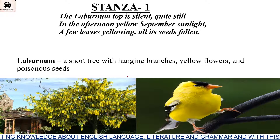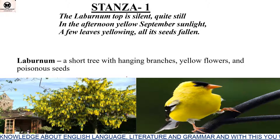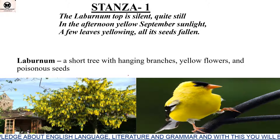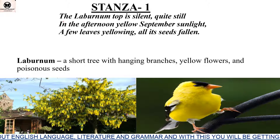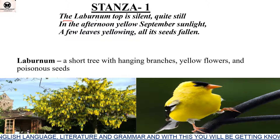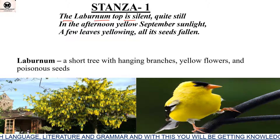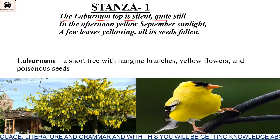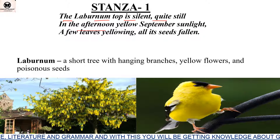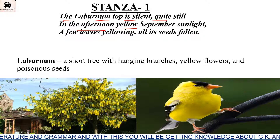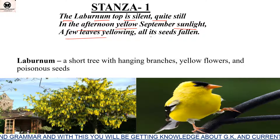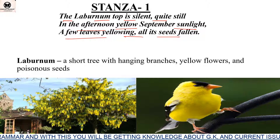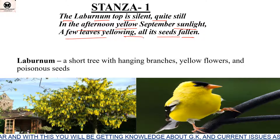Now let's talk about the first stanza of the poem. It reads: 'The Lebanon top is silent, quiet steel, in the afternoon yellow September sunlight, a few leaves yellowing, all its seeds fallen.'